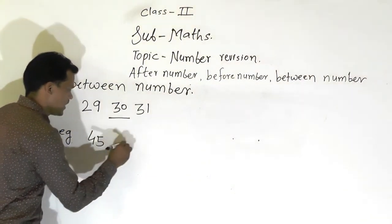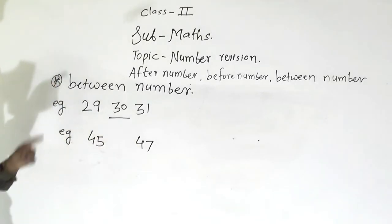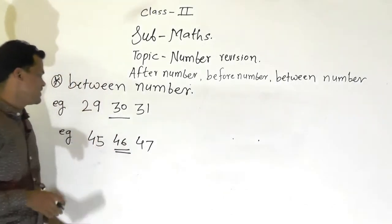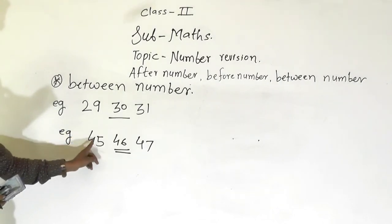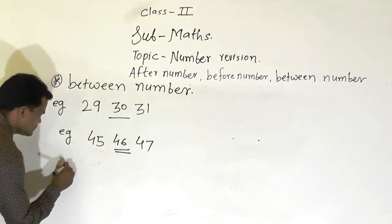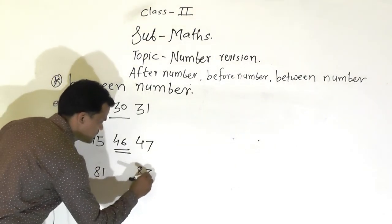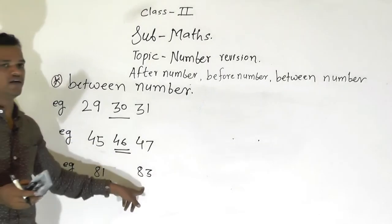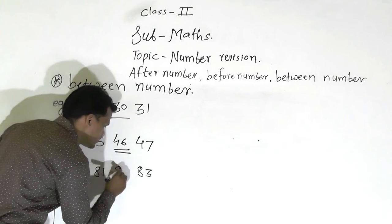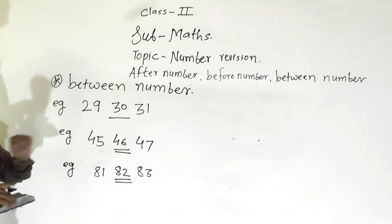One more example. 45 and 47. Also, in between 81 and 83, which number comes? That number is 82. So 82 is the between number of 81 and 83.